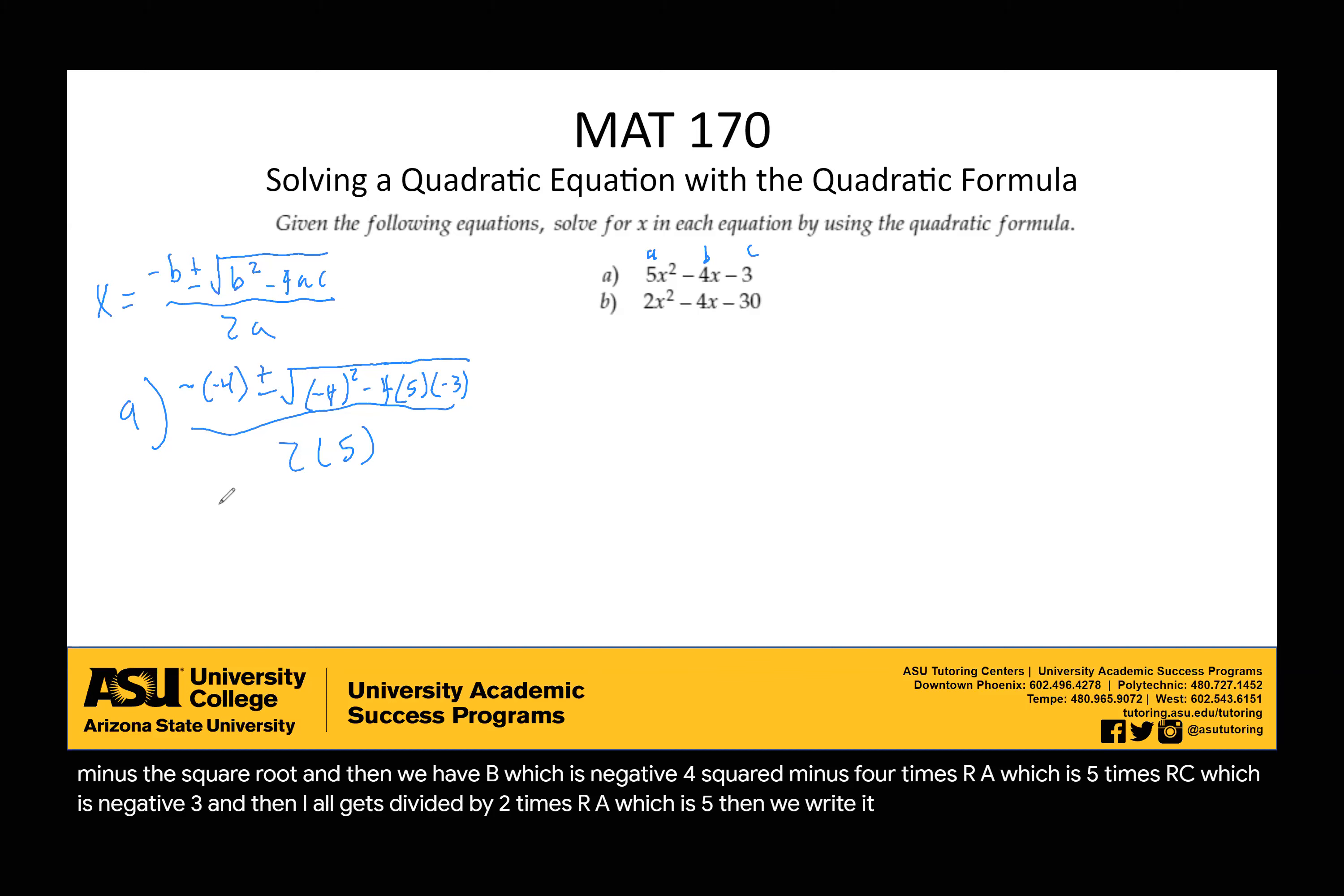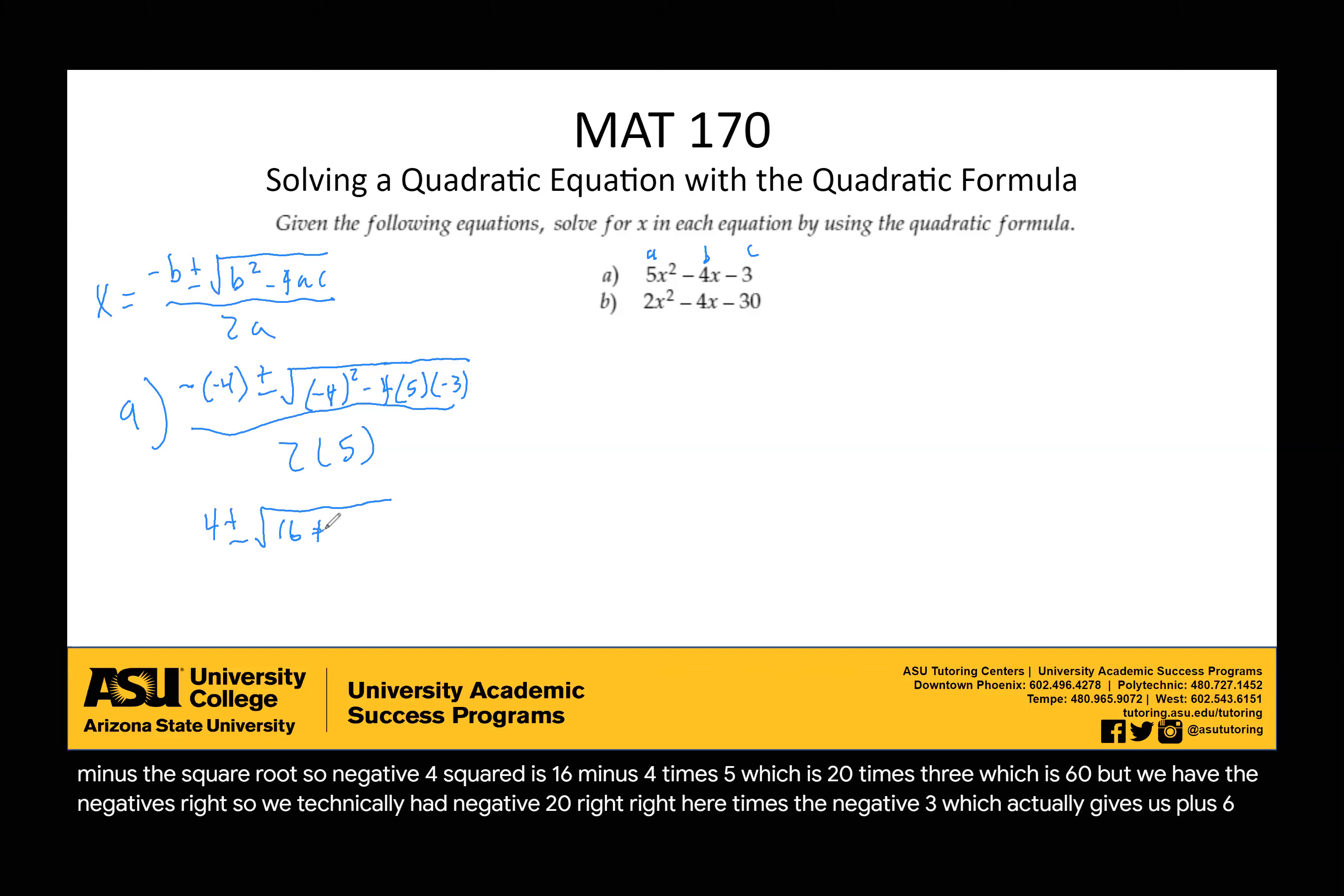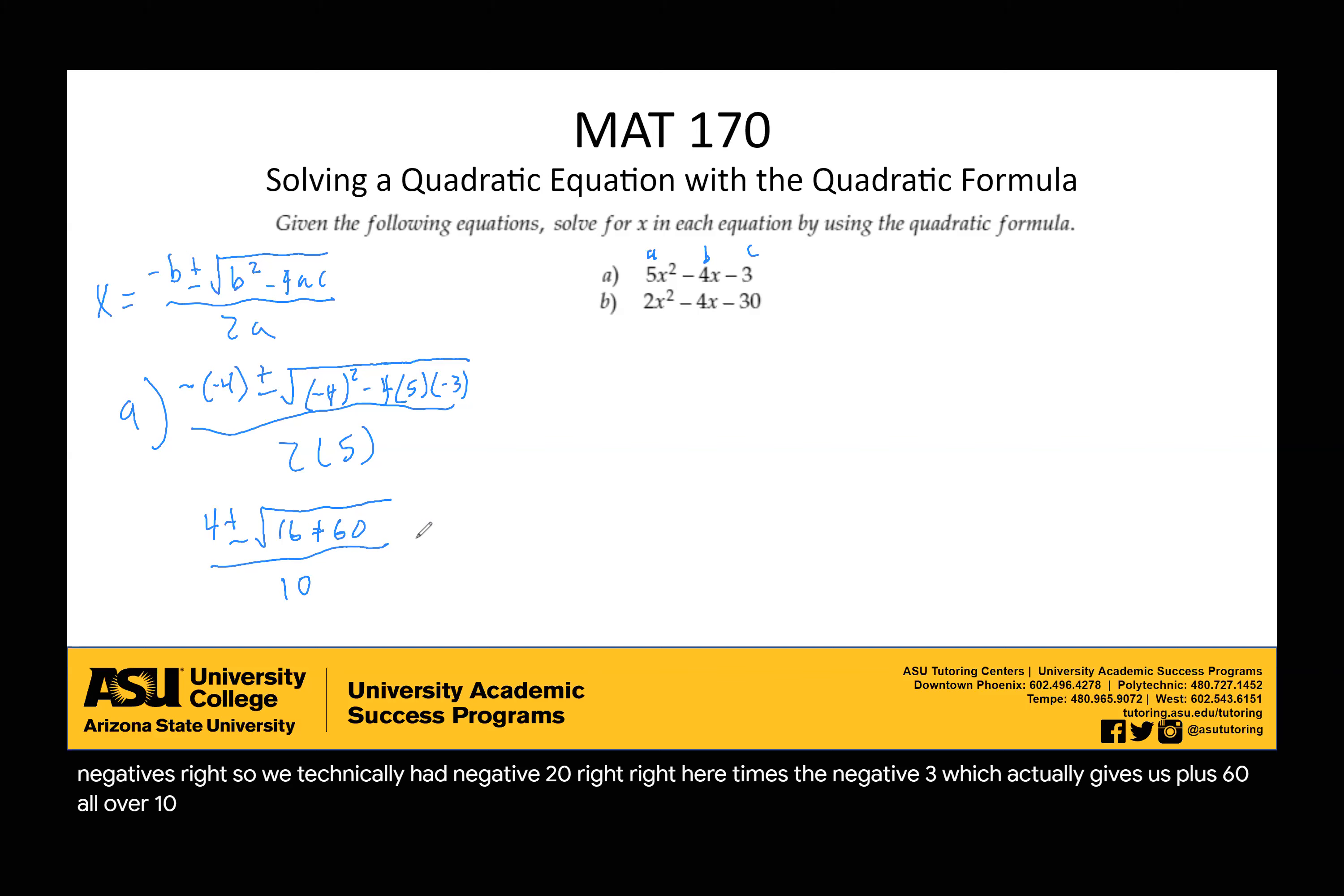Then when we write it out, we have our positive 4 plus or minus the square root, so negative 4 squared is 16, minus 4 times 5, which is 20, times 3, which is 60. But we have the negatives, right? So we technically had negative 20 times the negative 3, which actually gives us plus 60, all over 10. From here, we can reduce it. We can just reduce the inside a little bit more. So we have 4 plus or minus the square root of 76, all over 10. And that's what our answer is.